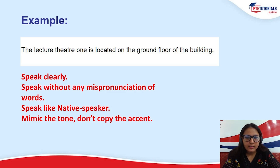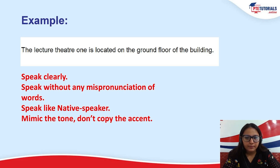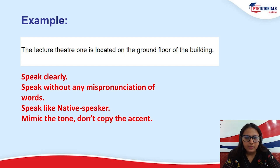So let's analyze pronunciation in a bit of detail. 'The lecture theater one is located on the ground floor of the building.' If speaking at a faster speed — 'The lecture theater one is located on the ground floor of the building' — each and every word is not getting analyzed by the system. In PTE exams, system checking is there, not manual checking. So we need to make sure we are speaking clearly, with no mispronunciation, moderate speed, moderate volume, and moderate tone. Don't try to speak fast to improve fluency — rely on your natural way of speaking.